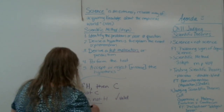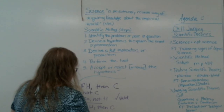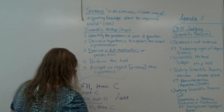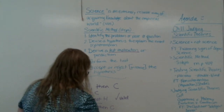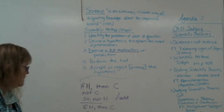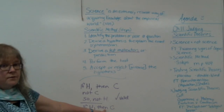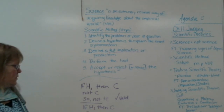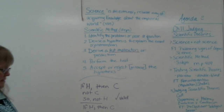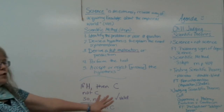Now, if we have the whole 'if H then conclusion' - if my hypothesis is true, then this conclusion is true - and, yay, the conclusion is true, so H. But this is an invalid argument. This is affirming the consequent. We know from chapters three and seven that this is an invalid argument. We can never say 100% that my hypothesis is true because we have an invalid argument.